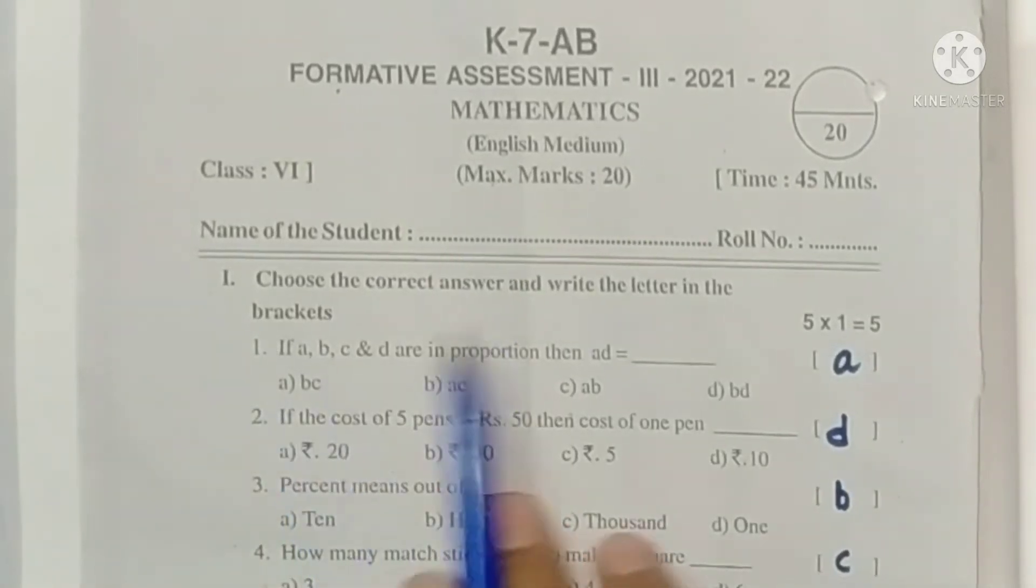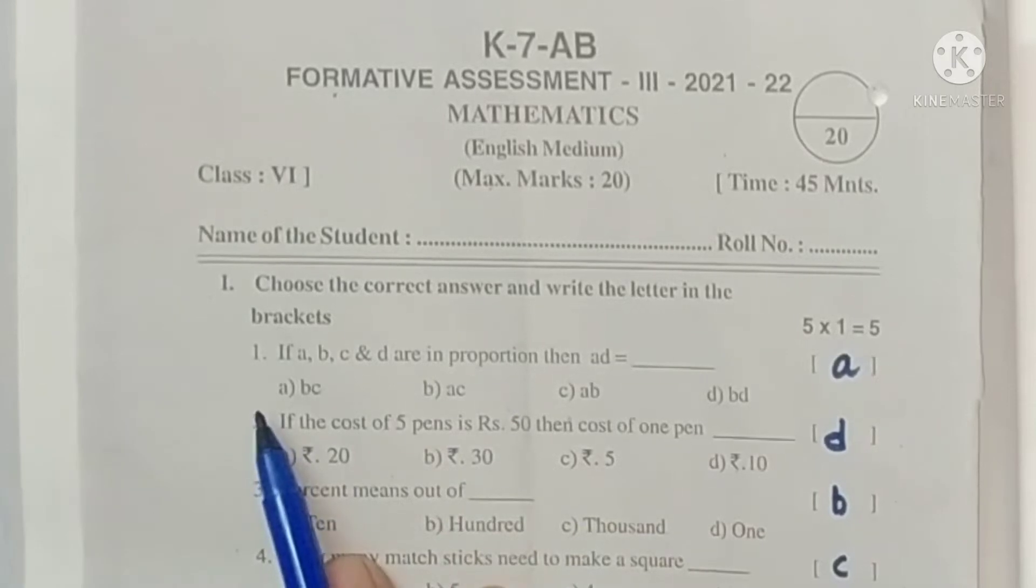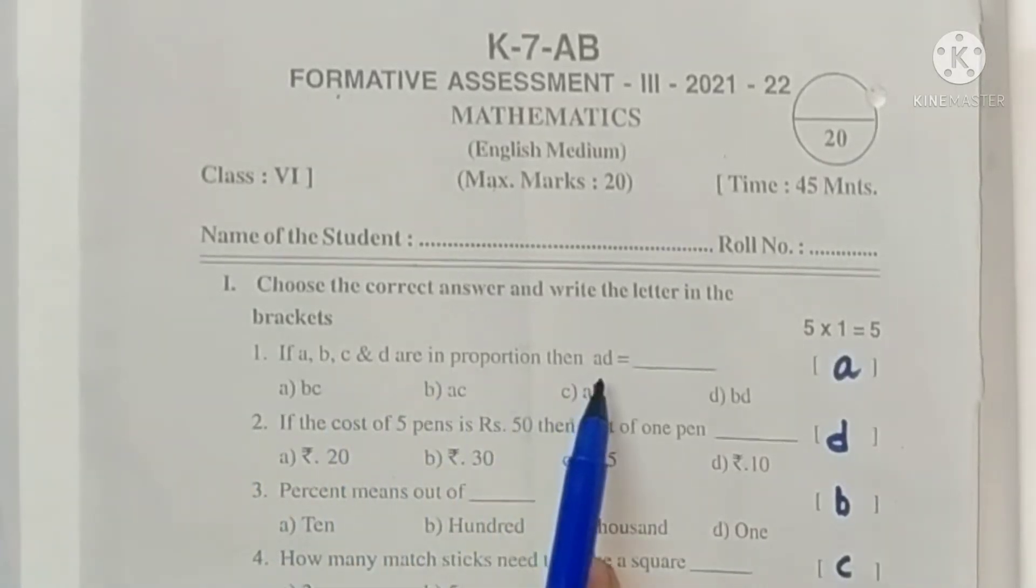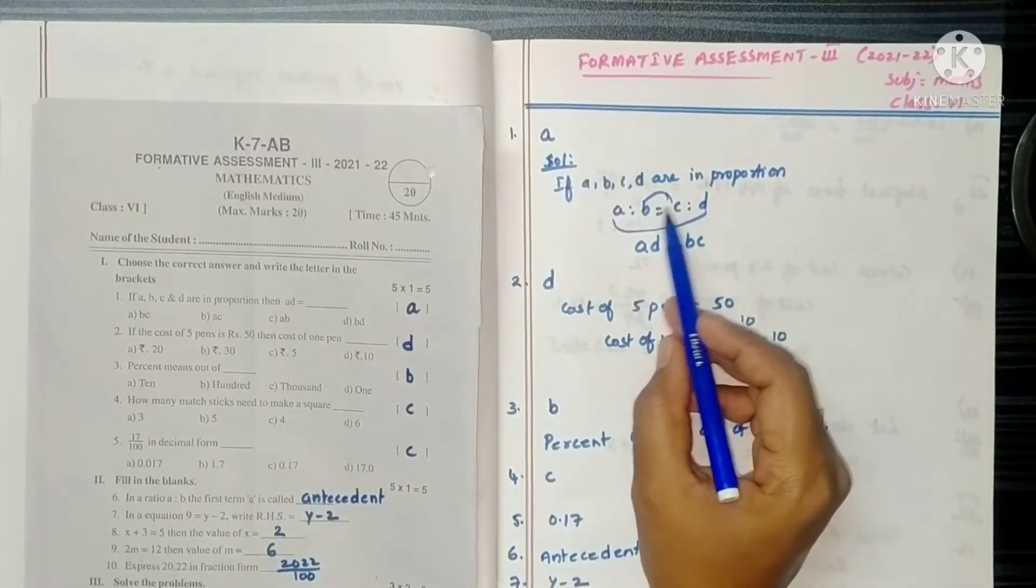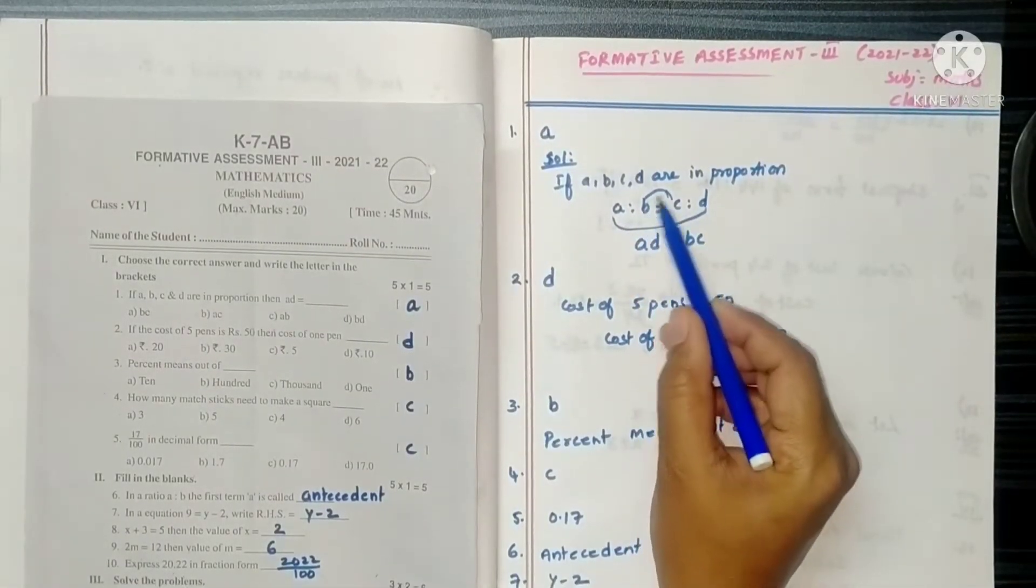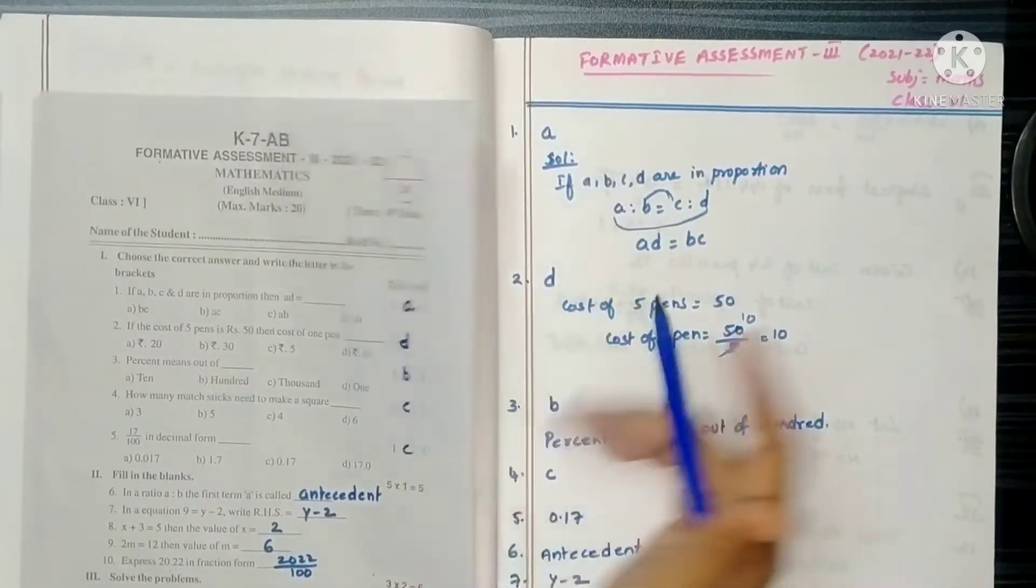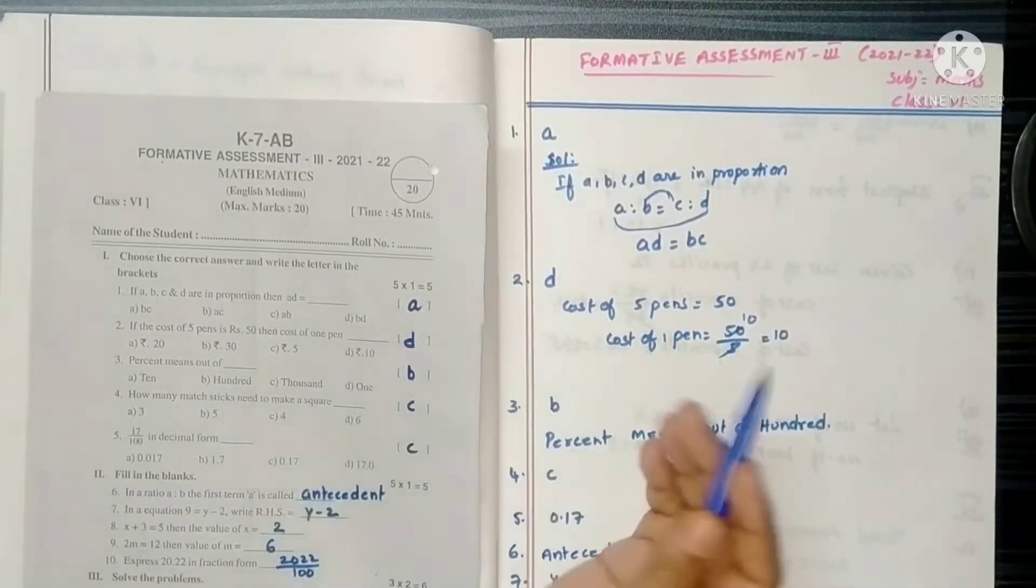So see this. First one, choose the correct answer and write the letter in the brackets. If A, B, C and D are in proportion, then AD is equal. Proportion means two ratios equal. So product of extremes is equal to product of means. So AD is equal to BC. So here option A.